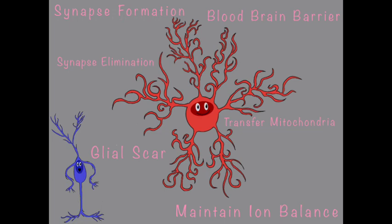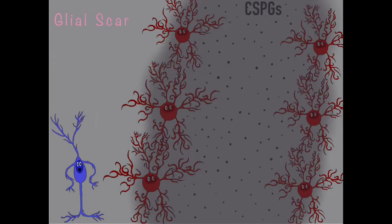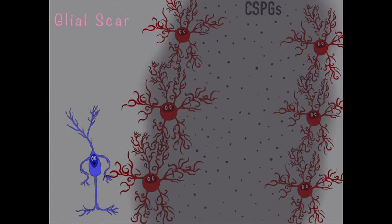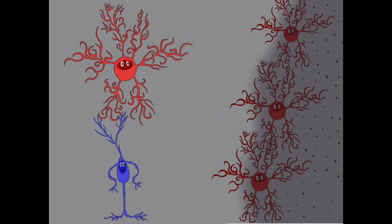The glial scar forms after an injury, which makes Annie very angry, and she turns into a reactive astrocyte. Reactive astrocytes secrete these molecules called CSPGs, which help to form a barrier for neuronal growth, which means I can't cross the glial scar, I would have to go around it.